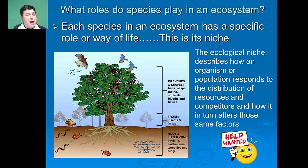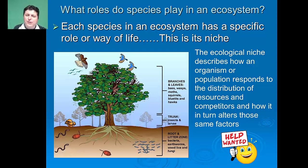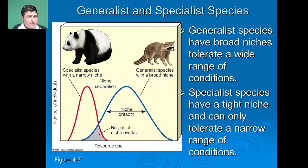The jobs that organisms do in their environment is called its niche. The ecological niche describes how an organism or population responds to the distribution of resources and competitors, and how in turn it alters those same factors. In an ecosystem, some organisms are generalists while others are specialists.